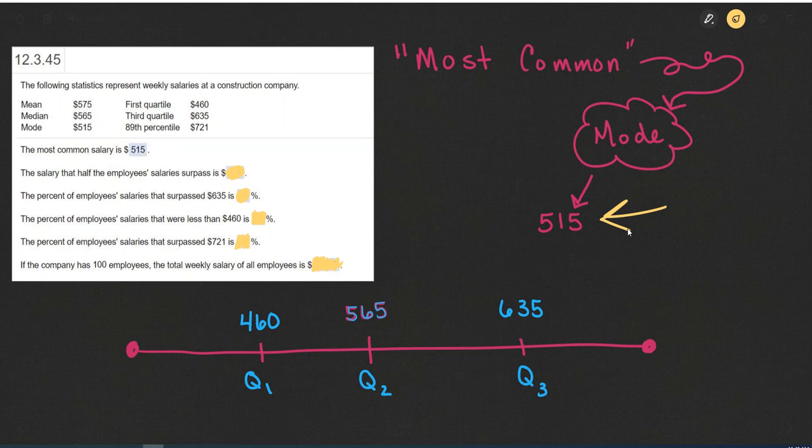Now what these quartiles mean are that 25% of the data, just like a quarter, is one-fourth of a dollar. A quartile is one-fourth of the data. So each of these little segments divided up by the quartiles is going to represent 25% of the data.